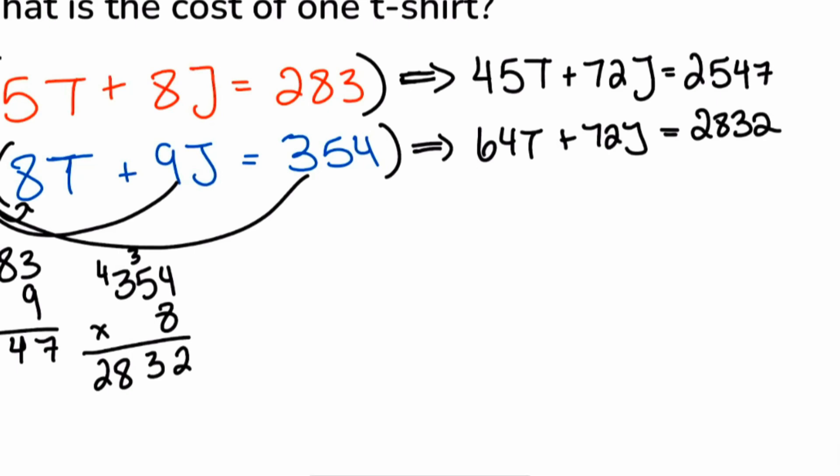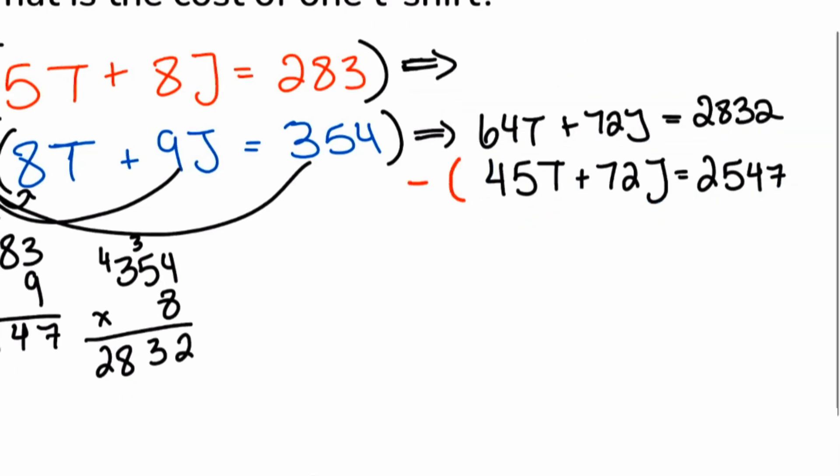Perfect. So now that we're here, we can move forward to just saying, if I wanted to get rid of the J, I can go ahead and subtract these equations. But I'll go ahead and move this one underneath. That way when I subtract, I'll keep a positive coefficient on the T. So in doing that, boom, now we can eliminate.